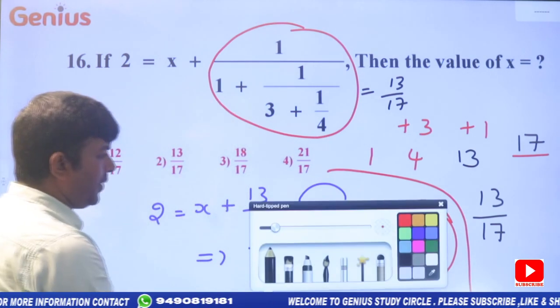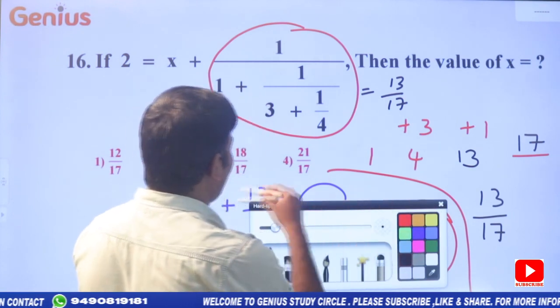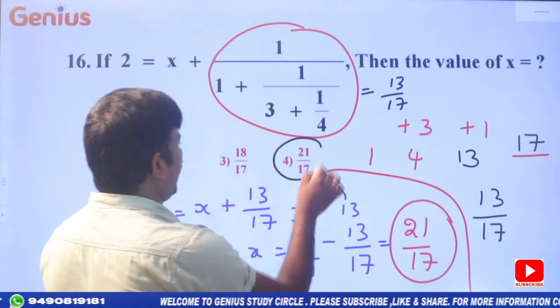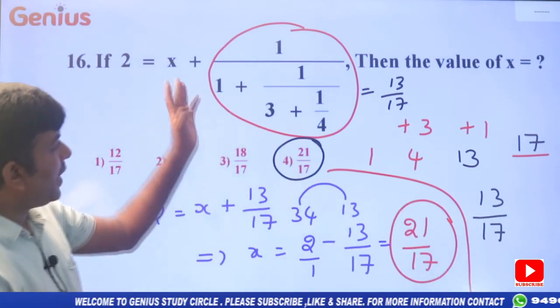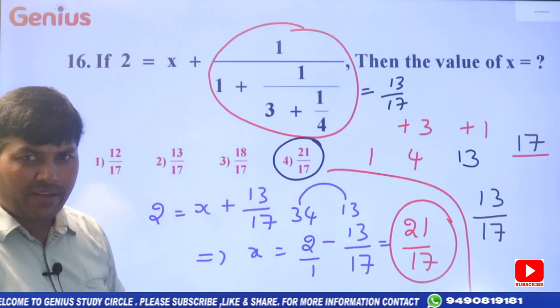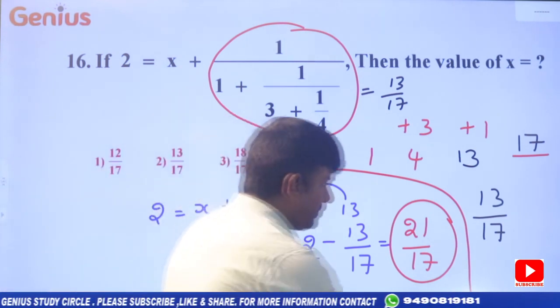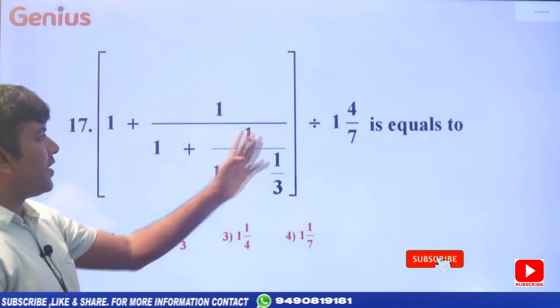So x = 21/17. Checking the options, 21/17 is the 4th choice. This problem's answer: x = 21/17.